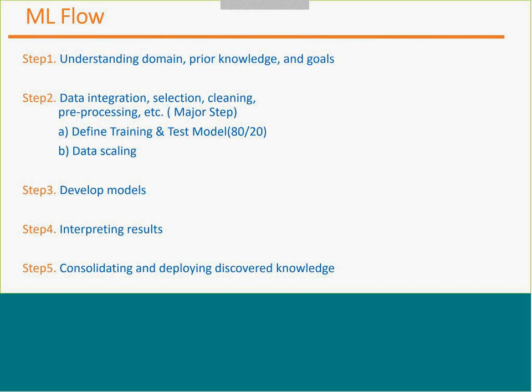Step three is developing a model. There are five different ways of developing a model, and we are going to cover each one of them. Step four is interpreting results. Once you run your machine learning algorithm, it provides a certain output, and based on that output you can make predictions. I will be covering R-squared and adjusted R-squared, which help to interpret the result. Step five is consolidating and creating your machine learning algorithm and deploying it for knowledge discovery.